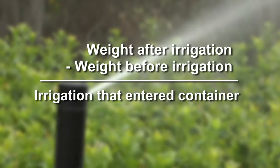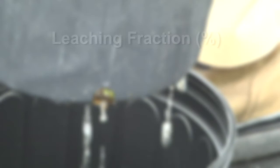The average weight after irrigation minus the average weight before irrigation equals the amount of irrigation that entered the container. Leaching fraction is the amount of leachate divided by the amount of irrigation that entered the container, times 100 to convert to percent.